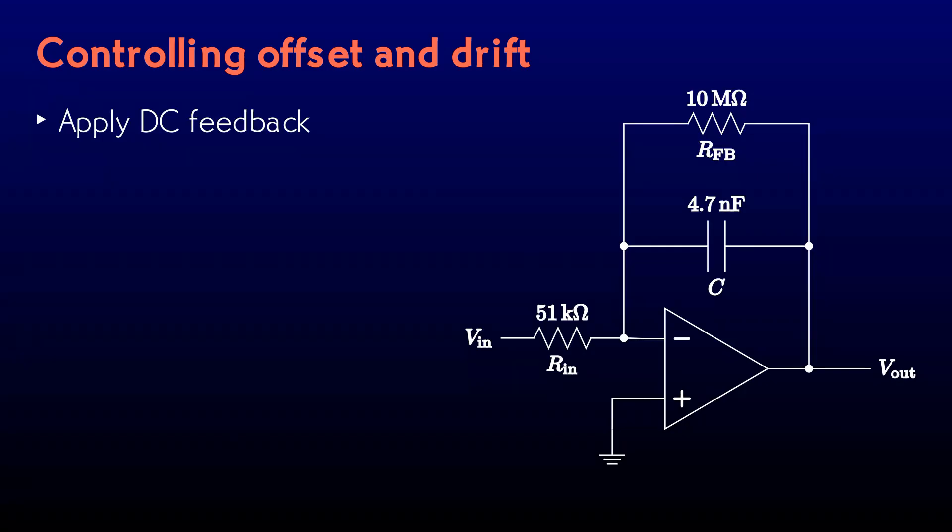The biggest single problem with the DC feedback approach is that it works only with AC signals, because the integrator action is rolled off by the feedback resistor. But sometimes sticking to AC is not an option. I can recall one time professionally when I needed to regulate the precise amount of light hitting a sample from a light source whose intensity varied over time. The exposure time could be minutes. I used a photodetector and integrator to measure the total amount of light. Just using a feedback resistor would have been hopeless.